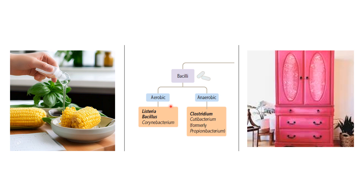Within the bacilli, the two important categories are aerobic and anaerobic. For aerobic, remember Listeria as Listerine mouthwash, Bacillus as basil, and Corynebacterium as corn. This image should conjure up a fresh aerobic atmosphere — we use Listerine mouthwash to freshen our breath, and plants like basil and corn exchange CO2 for oxygen.